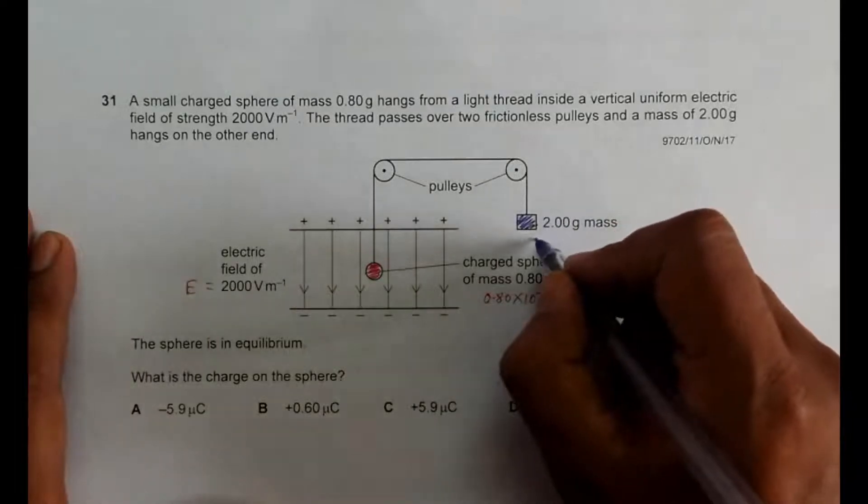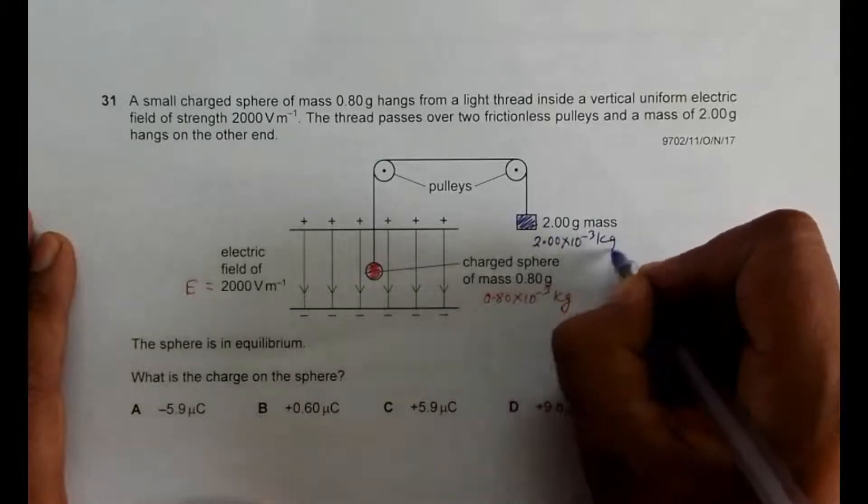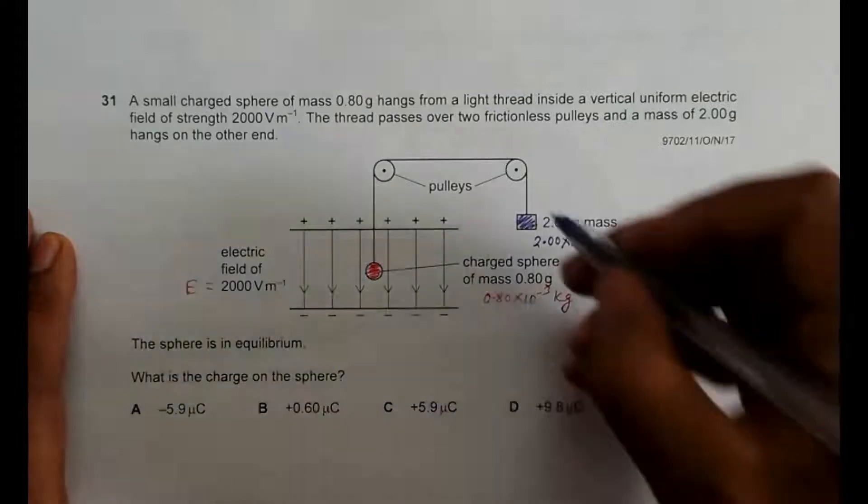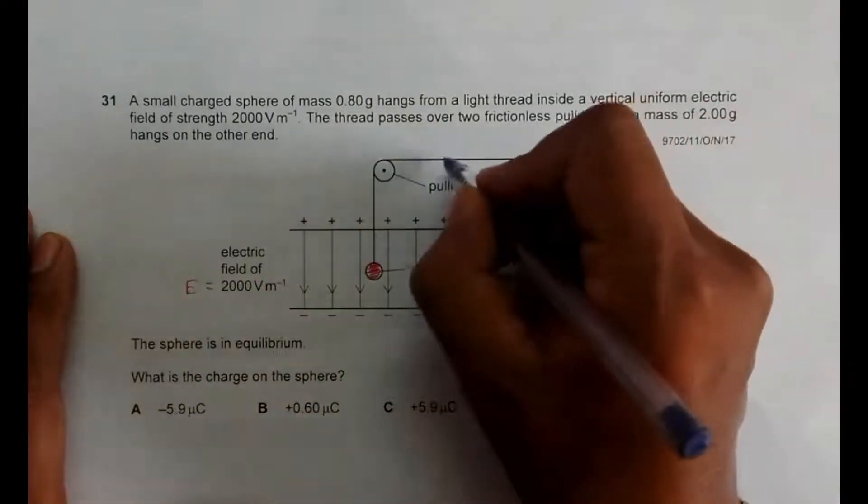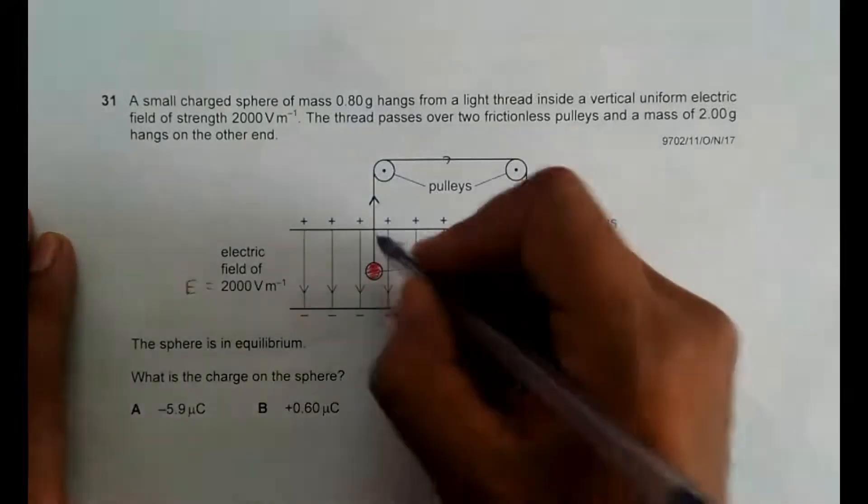Let me name it as 2.00 into 10 to the power minus 3 kg. So among these masses, this mass is heavier, which means this force is higher.